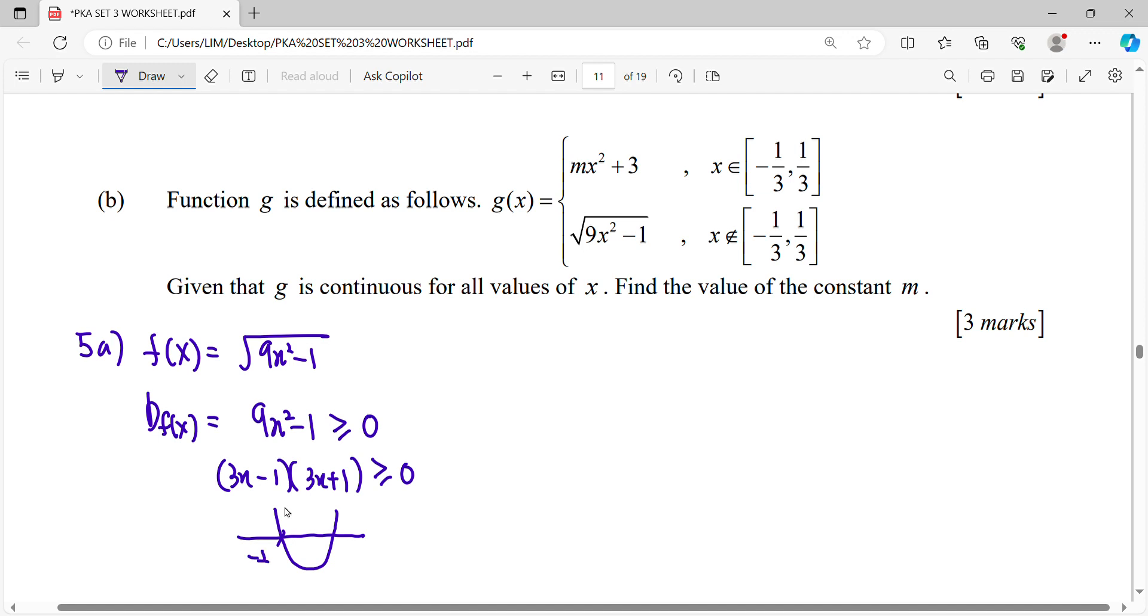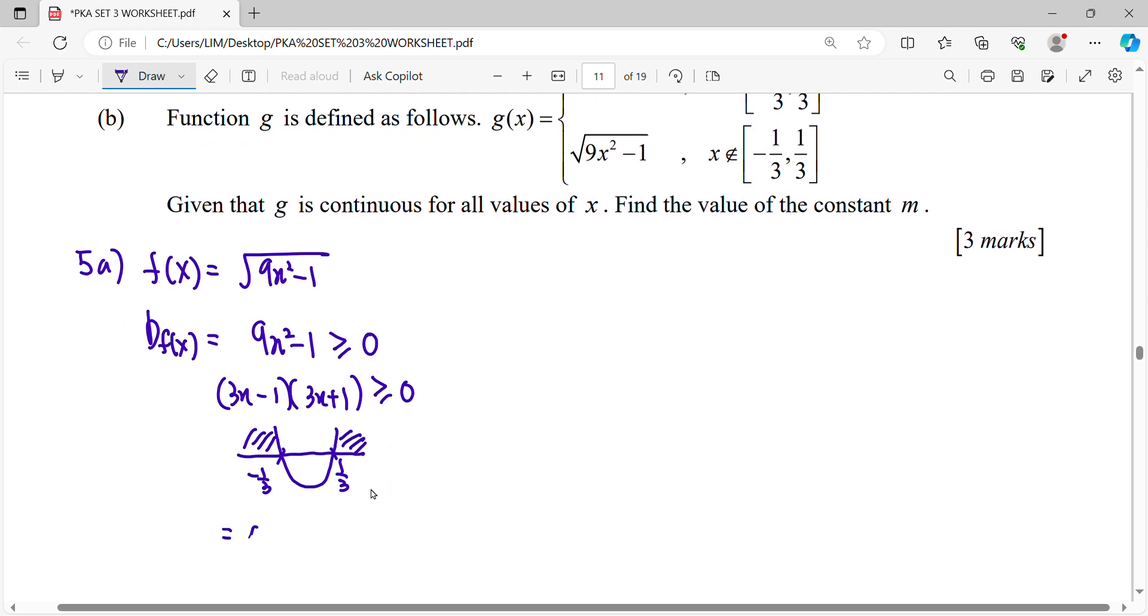So negative 1 over 3, 1 over 3, means your domain only fall on negative infinity until negative 1 over 3 included, continue, 1 over 3 until infinity.